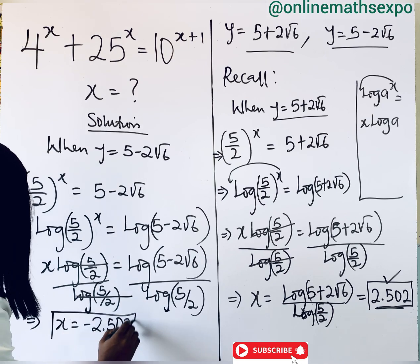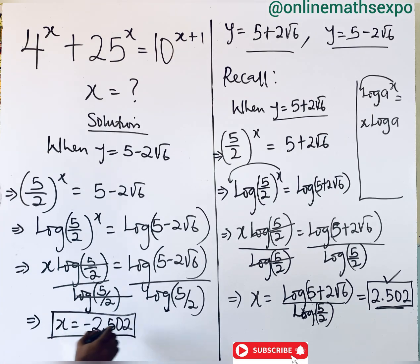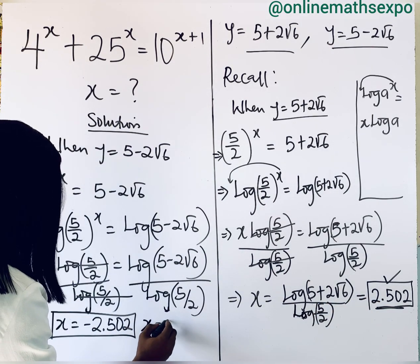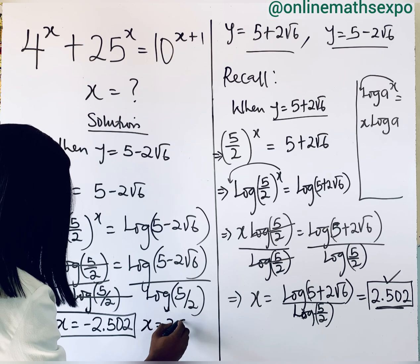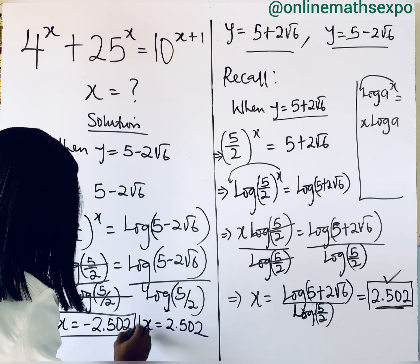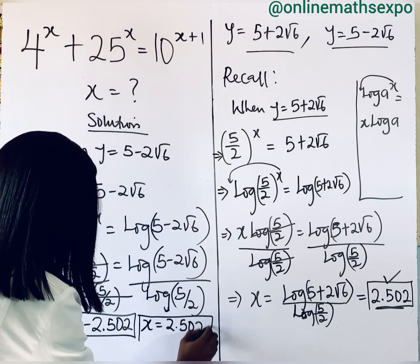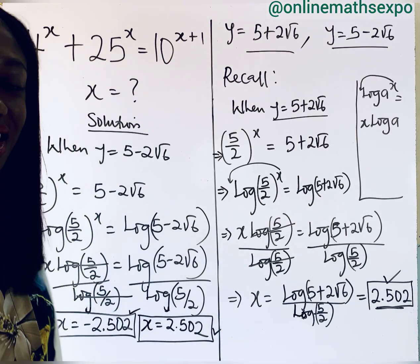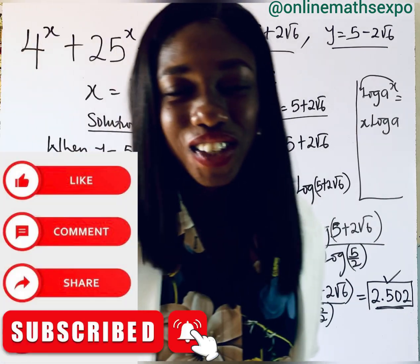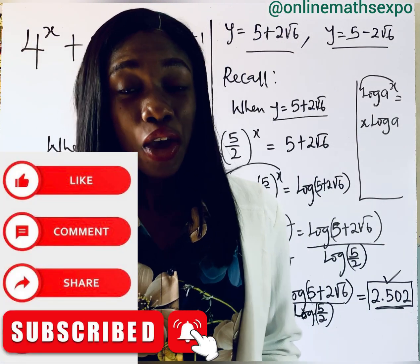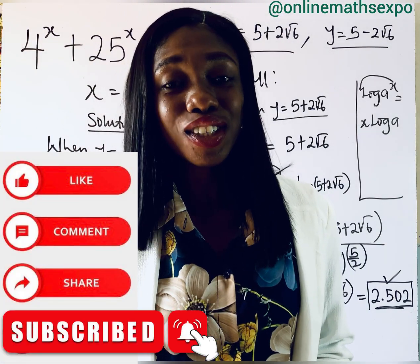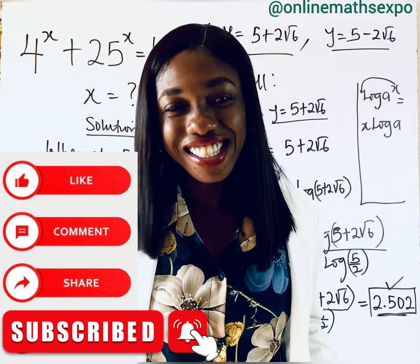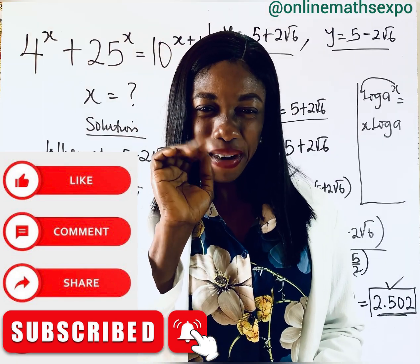So the second value of x is negative 2.502. The two values of x are 2.502 and negative 2.502. I hope this helps you a lot — let us know in the comments. Remember, sharing this will help more people learn this skill. See you in our next class. Bye-bye.